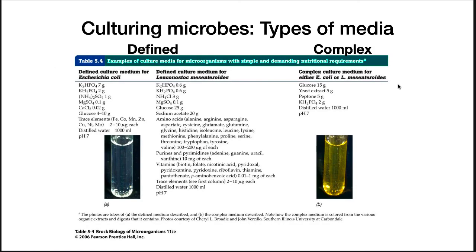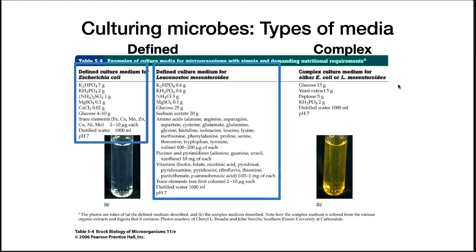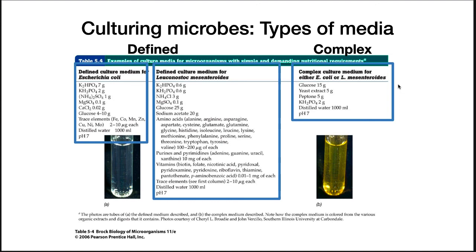Medium can also be classified by the types of ingredients. If the identity and quantity of everything is known, it is a chemically defined medium. E. coli only needs glucose and a few salts. In contrast, Leuconostoc mesenteroides requires the same salts and glucose plus all amino acids, all nucleotides, a long list of vitamins, and acetate — both are chemically defined media, one just has more ingredients. Complex medium is made using extracts such as yeast extract or peptone, often waste products of other industries. The exact concentration of chemicals inside these extracts isn't always known, so this is called a complex medium.